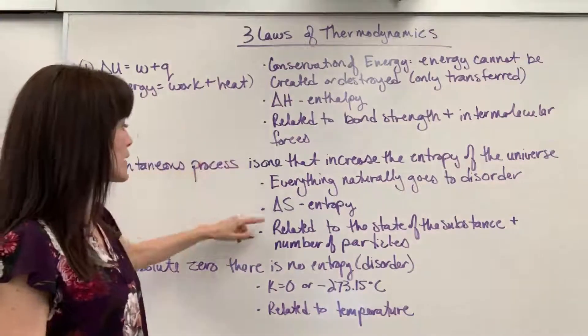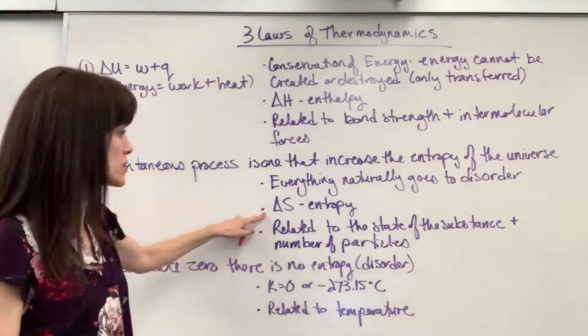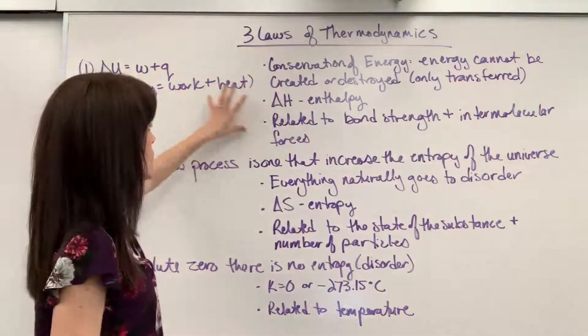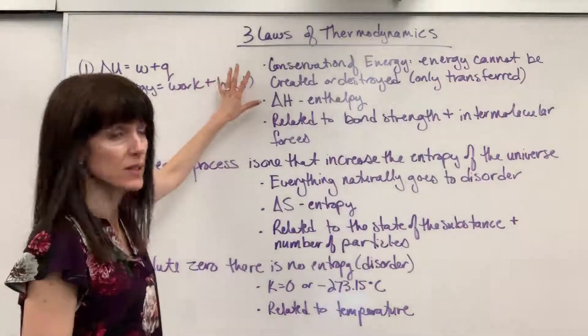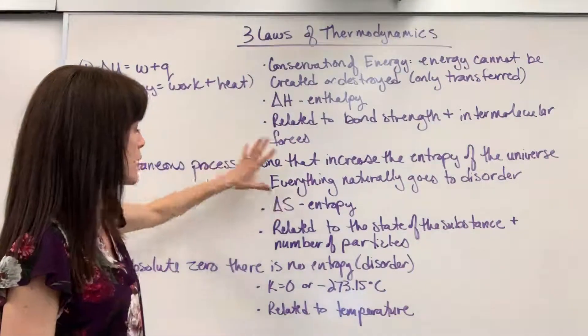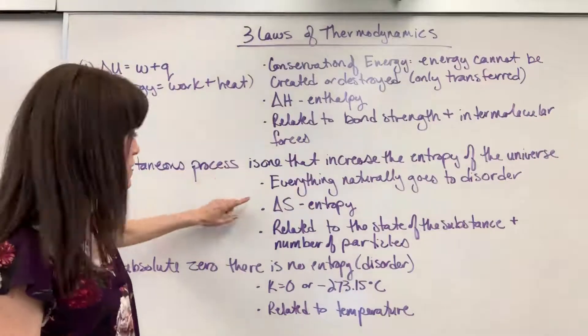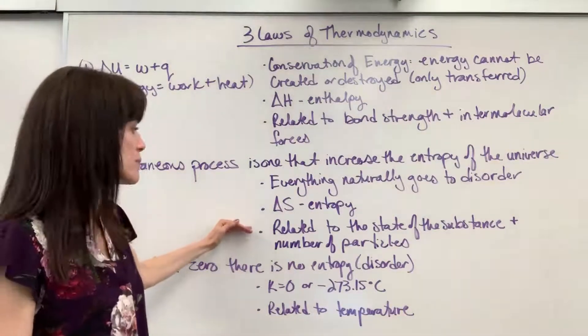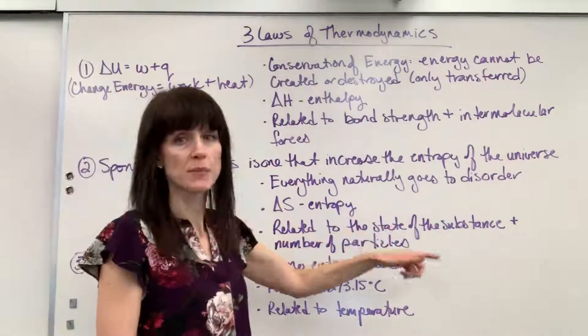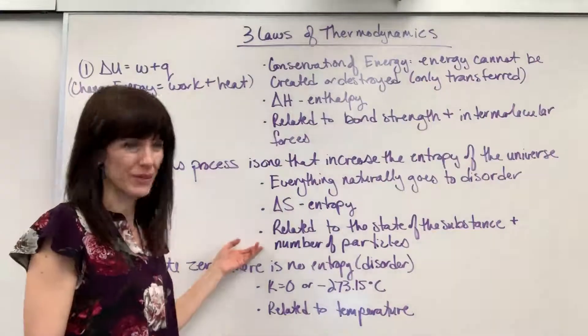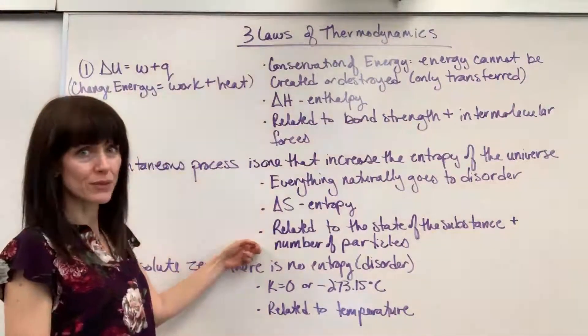So where this is embodied, delta S. Delta S is our sign for entropy. So this is all talking about disorder. So this is talking about the heat, the work, and for chemistry, delta H. Here we're talking about disorder, a measure of disorder. So that's your delta S. And where you're going to see this in chemistry is related to the state of a substance. So the phase, solid, liquid, gas, and the number of particles. That is huge.